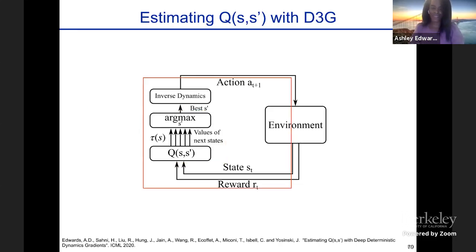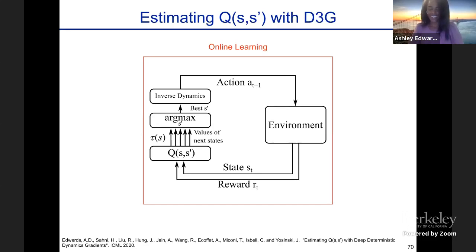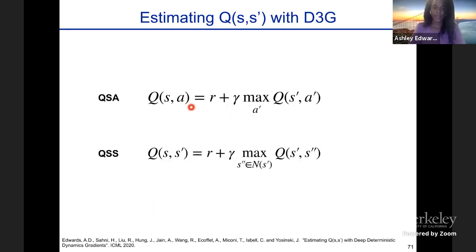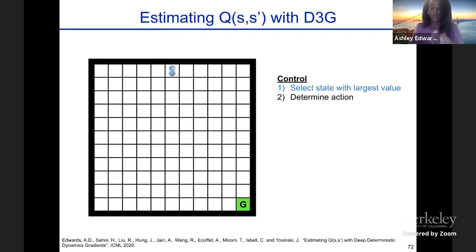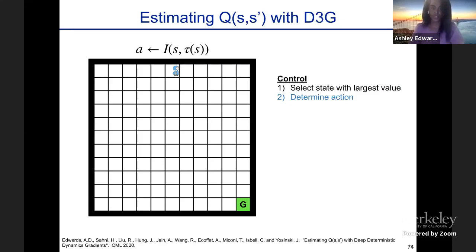Before getting to offline learning, it's useful to discuss the online scenario. The main difference between Q(S,S') and Q(S,A): Q(S,A) learns the reward plus discounted future return for selecting an action maximizing Q(S,A) values, whereas Q(S,S') selects the next state maximizing Q(S,S') values. For control: given a state, we select the state with the largest value from our model τ — instead of selecting the action with the largest Q(S,A) value — then plug that into our inverse dynamics model to get the action that would allow that transition, and follow that action.